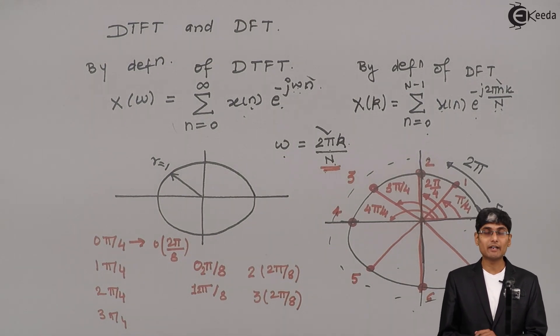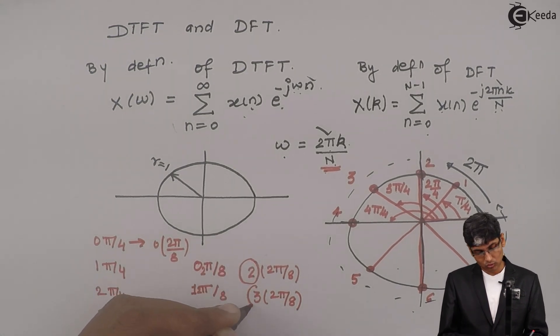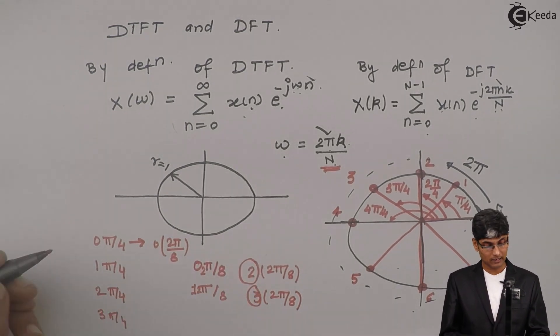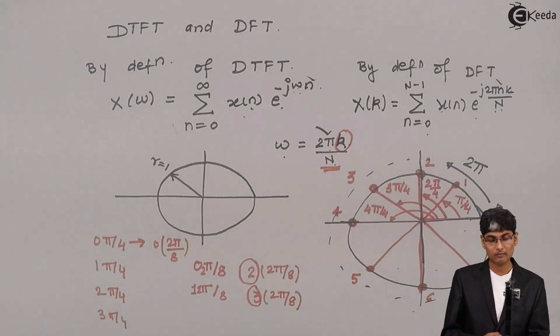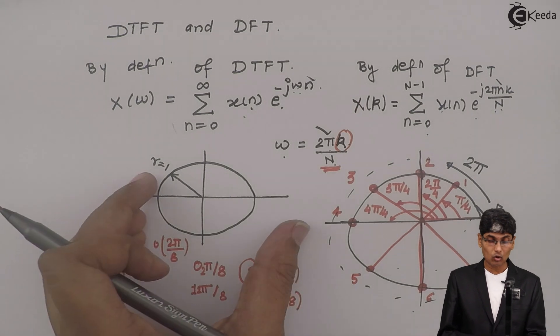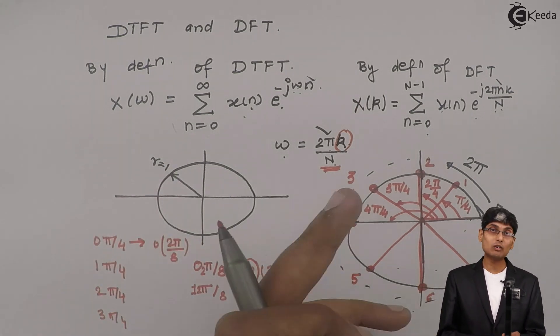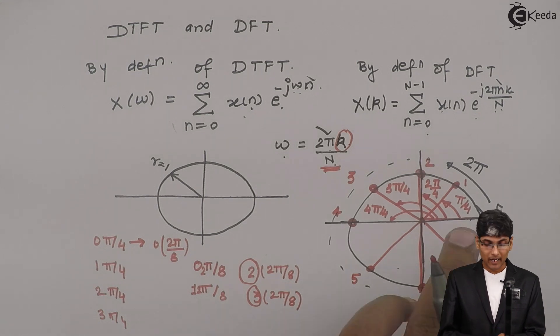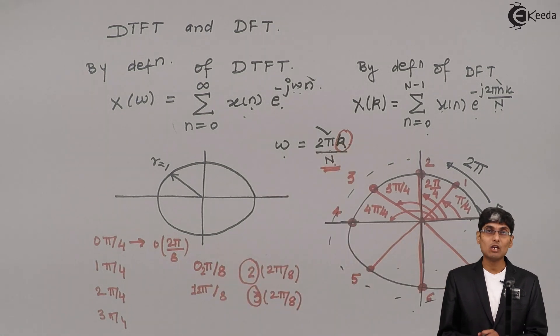This capital N is actually the number of divisions. In our case, it was 8. Then these integers, that is 0, 1, 2, 3 and so on, is the K. So what I did: I took the omega domain, I chopped it up into equal number of parts, and that omega now gives me a new value which we called as 2πk/N.